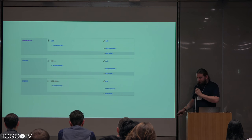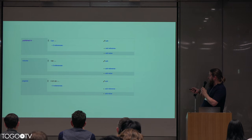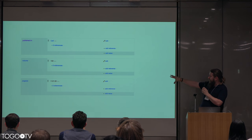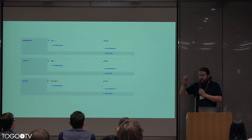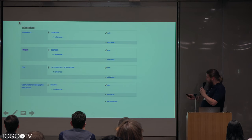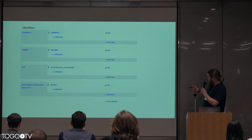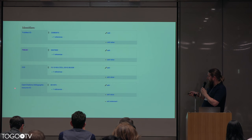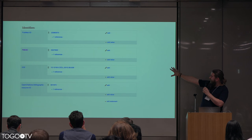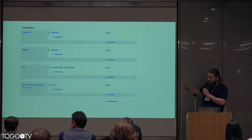Then you get a bunch of standard information about the publication — published in Science, volume, pages. That's just standard structured information, but it's already way better than what you usually get from a reference on a paper, because it's more than just text. And then you have a bunch of identifiers, like a PubMed ID, PubMed CID, DOI, and you can have as many relevant identifiers as you like. You click on that and get directly to PubMed or other resources.